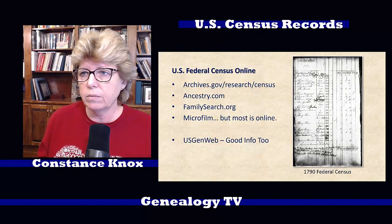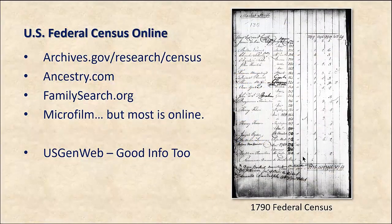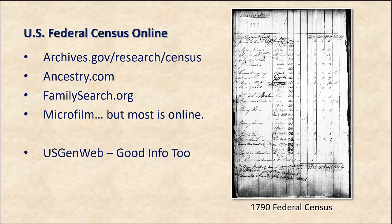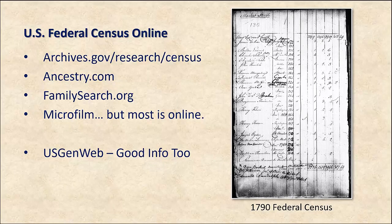The U.S. federal census locations — places you can find the census schedules — include archive.gov, and a lot of these are free resources. Ancestry.com, FamilySearch.org. You can also find it on microfilm in a lot of the major libraries. And also make sure you check out U.S. GenWeb — they have good information there too. A lot of these resources are free.